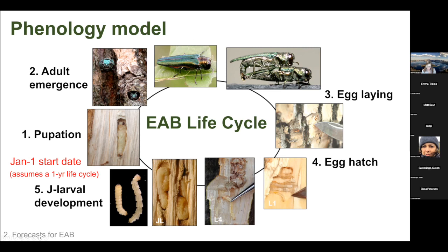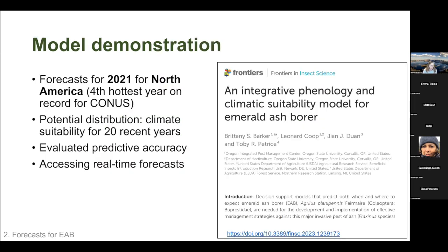Adults mate and begin ovipositing on the bark. Egg laying and egg hatch are predicted by our model. Larvae form S-shaped feeding galleries under the bark as they develop through instars, eventually folding into the J-larva shape for overwintering. I'm going to demonstrate the model using forecasts for 2021 for North America, as we published a paper on this work with co-authors Len Coop, Jean Duan, and Toby Petrice.